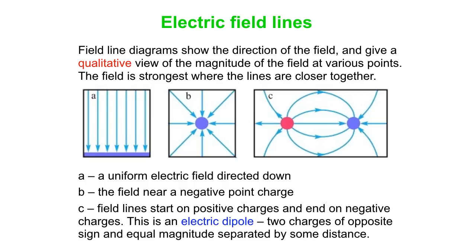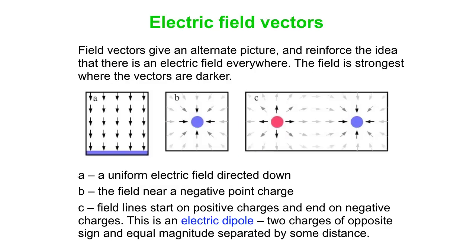The red one is positive, the blue one is negative. Electric field lines start on the positive charge and end on the negative charge. An alternative to this is electric field vectors, which reinforces the idea that there's an electric field everywhere in space. The field is strongest where the vectors are darker.